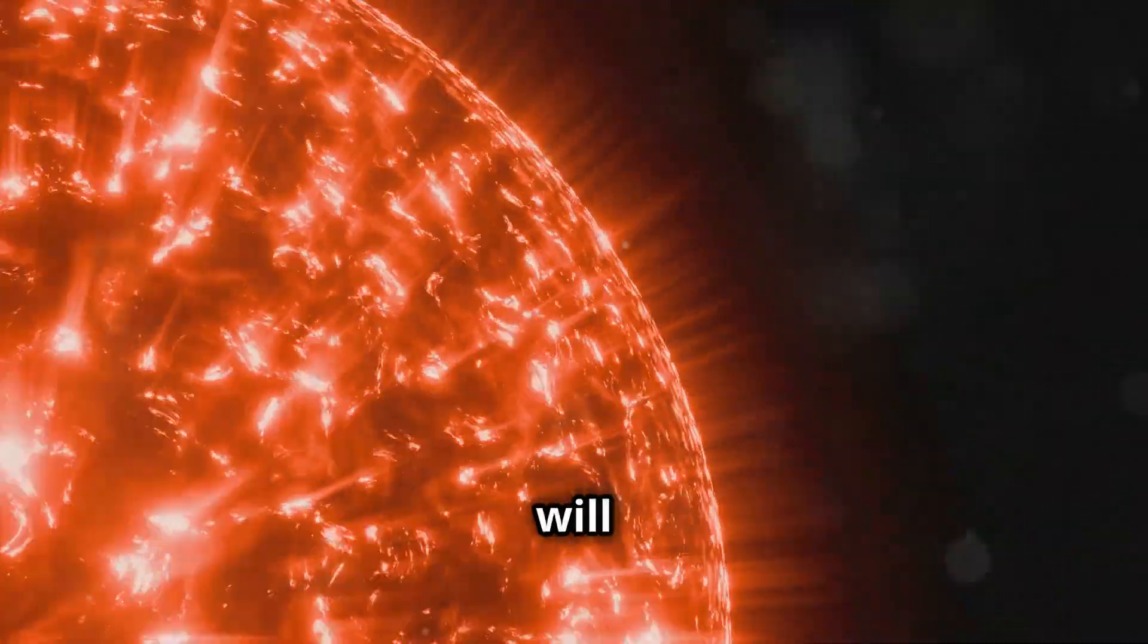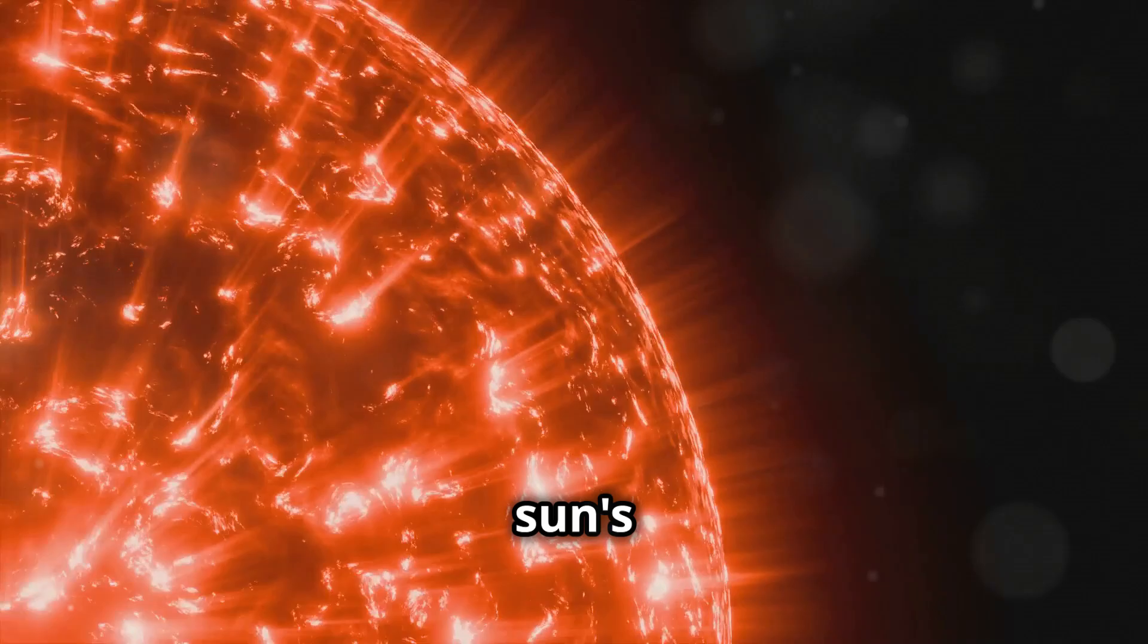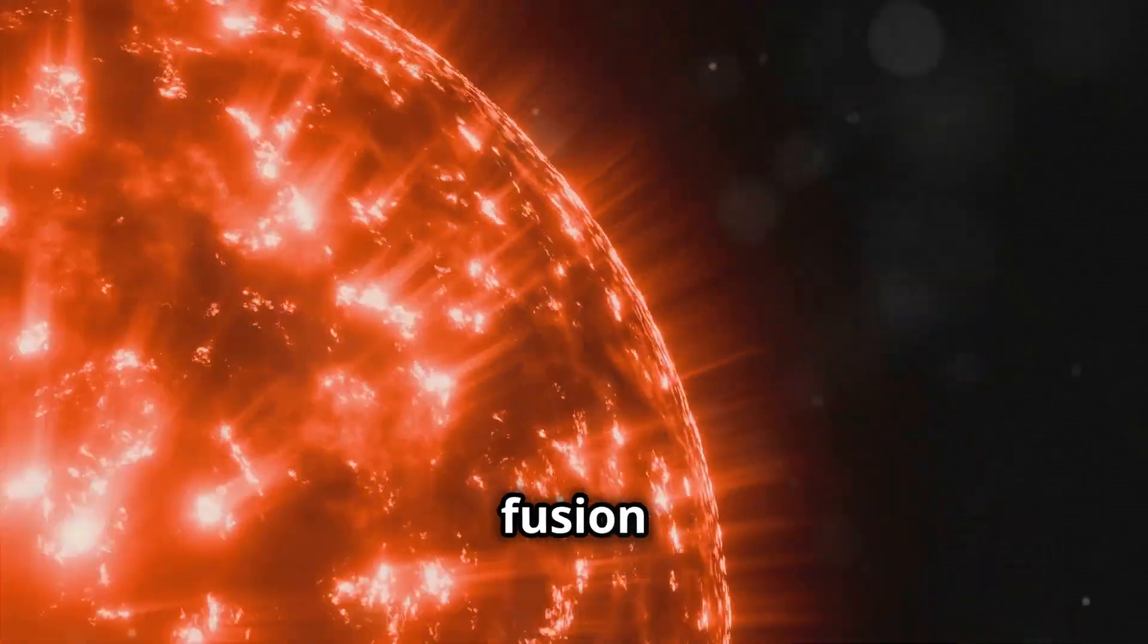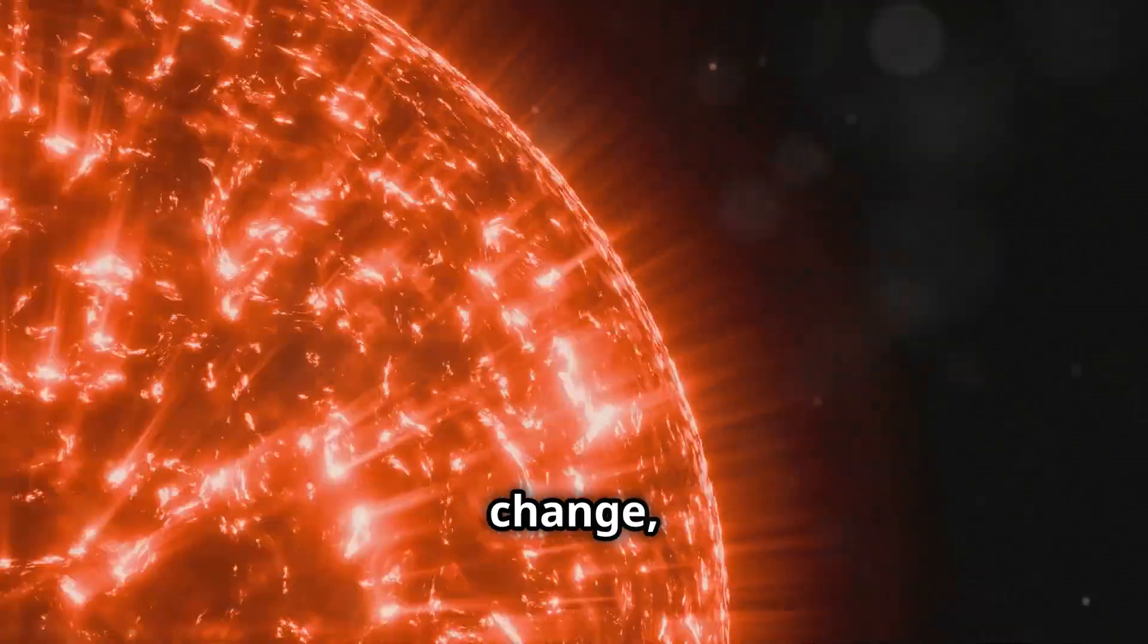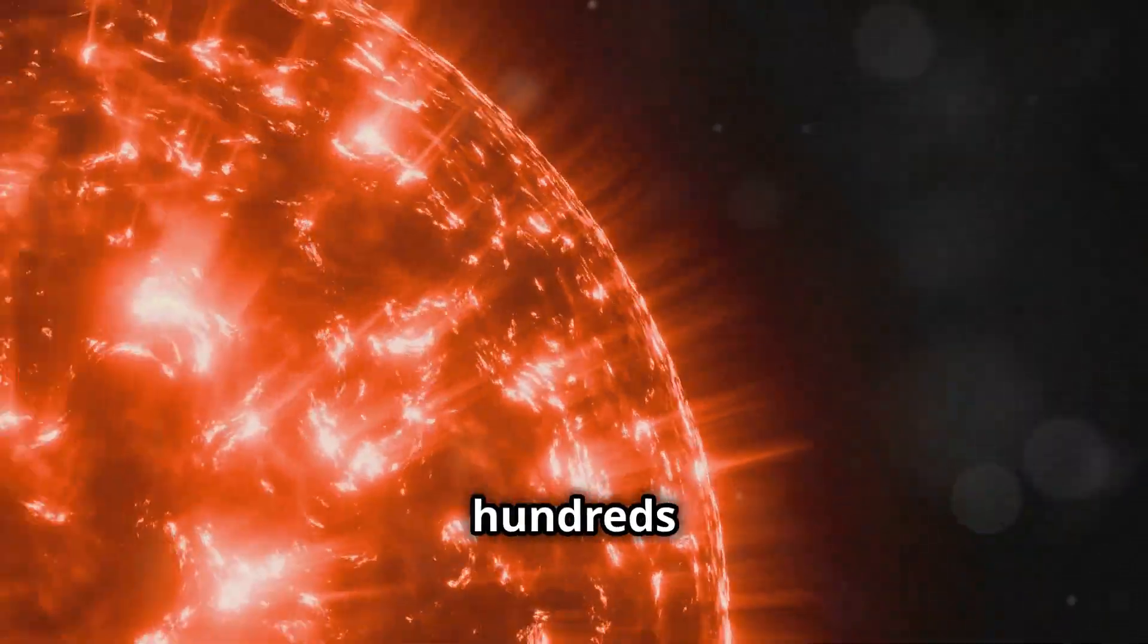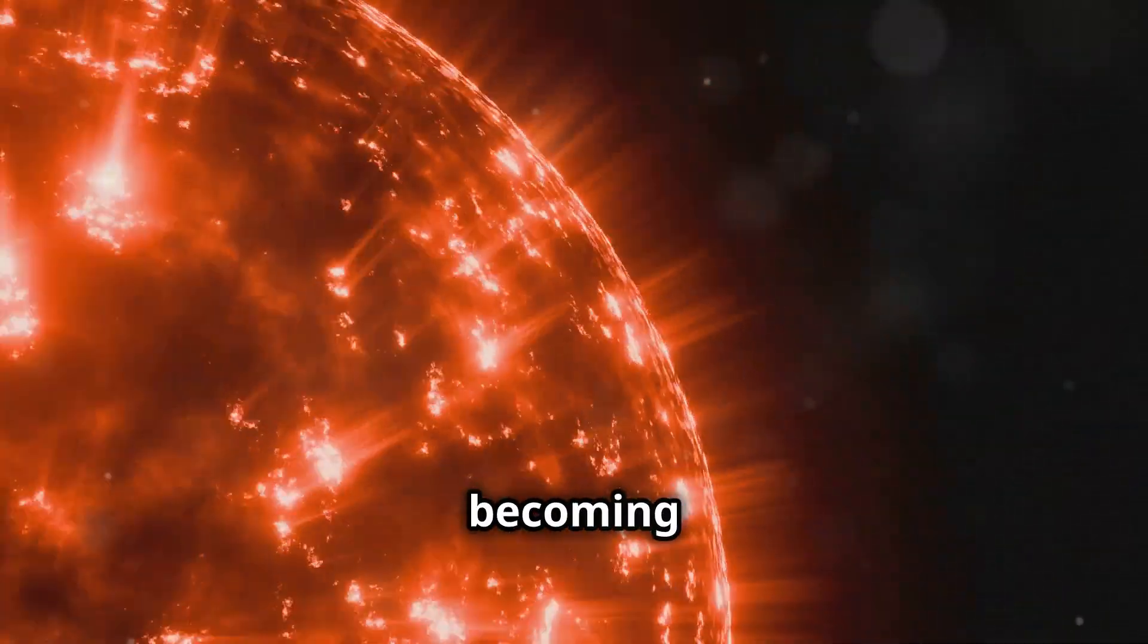Meanwhile, the core will contract and heat up, driving the changes in the sun's outer layers and causing helium fusion to begin. The red giant phase will be a dramatic change, with the sun growing to hundreds of times its current size and becoming much brighter.